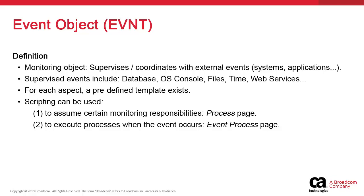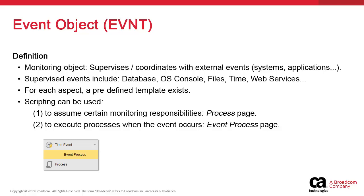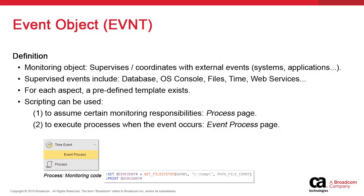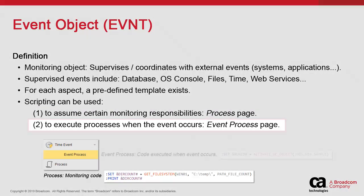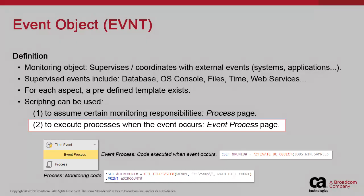The way we do this is the same as any other executable object, by incorporating event objects in workflows and by incorporating script code. Scripting can be added in two places. First, in the conventional process page — this code executes when the event object executes. But the event also has a dedicated event process page, which executes specifically when the supervised external event occurs and is detected by the object, which is then triggered.